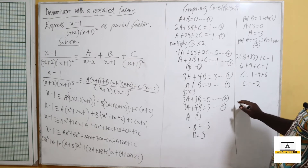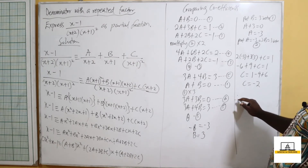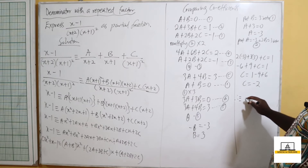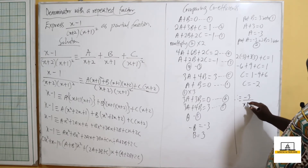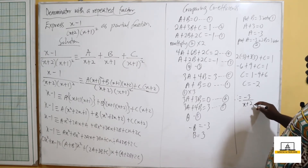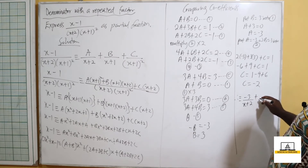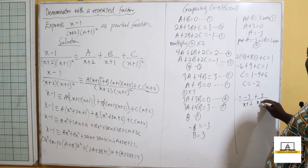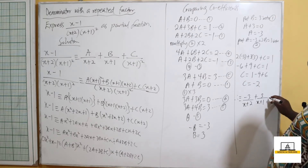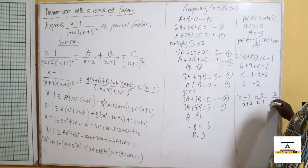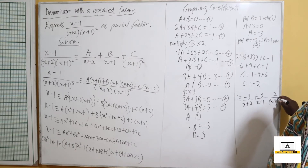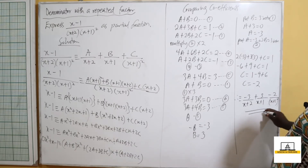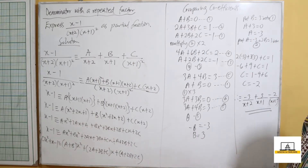Our partial fraction can now be written as: negative 3 over (x+2), plus 3 over (x+1), minus 2 over (x+1)². This is the partial fraction.